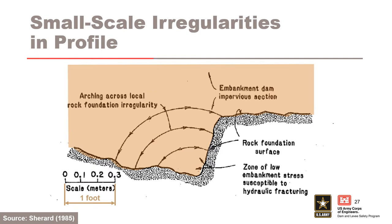Small-scale irregularities in the foundation of the core can lead to cracking or low stresses conducive to hydraulic fracture. For cracking or low stresses to occur, the irregularities need to be persistent over all or most of the distance across the core and have steps greater than approximately 3 to 5 percent of the embankment height. Examples of these irregularities include those formed by constructing haul roads across the core and steps in slope correction concrete.